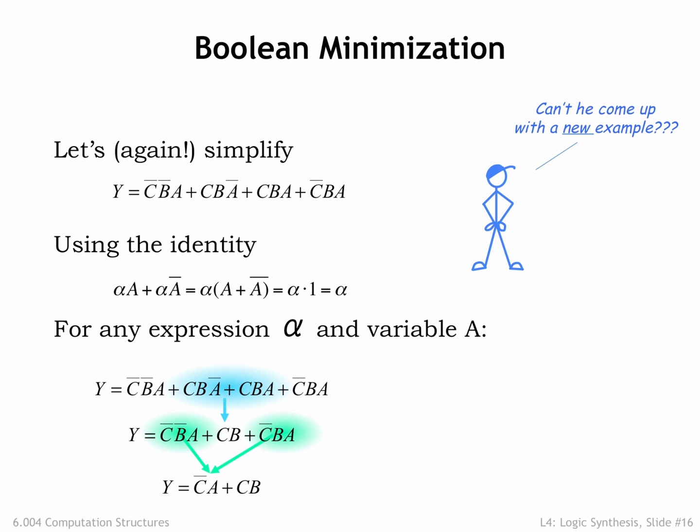Counting inversions and pairwise operations, the original equation has 14 operations, while the simplified equation has 4 operations. The simplified circuit would be much cheaper to build and have a smaller TPD in the bargain!